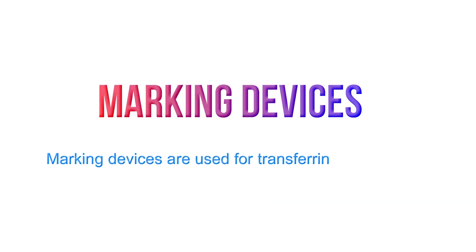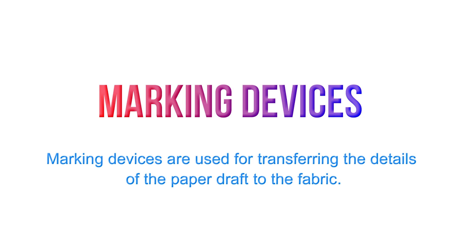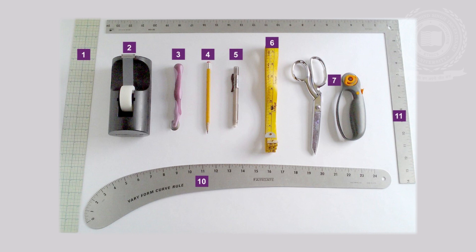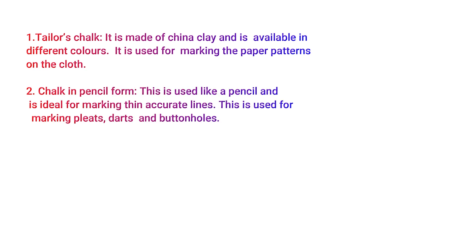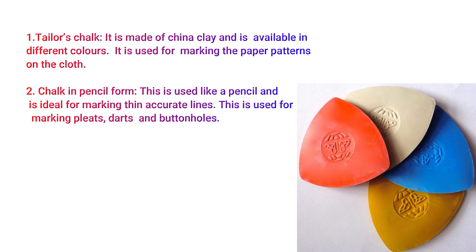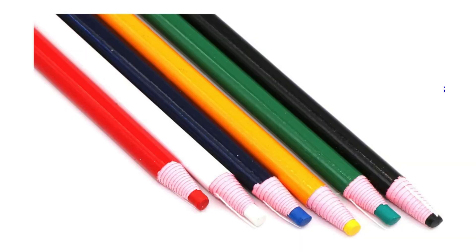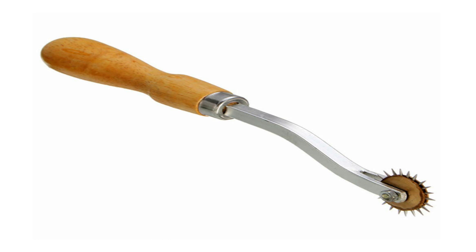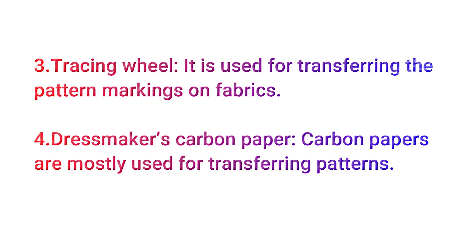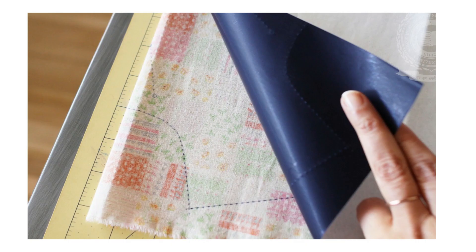Now we can talk about marking devices. Marking devices are used for transferring the details of the paper draft to the fabric. In marking devices, we have tailor's chalk, which is made of china clay and is available in different colors, used for marking paper patterns on the fabric. We also have chalk in pencil form, which is ideal for marking thin accurate lines and is used for marking pleats, darts, and button holes. The tracing wheel is used for transferring pattern markings on fabrics, and dressmaker's carbon paper is mostly used for transferring patterns.